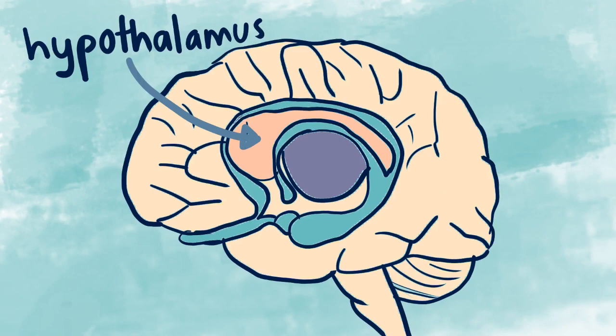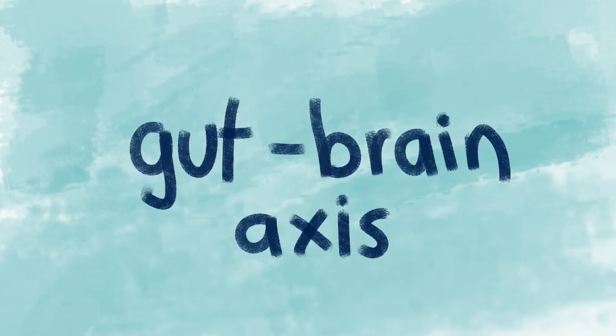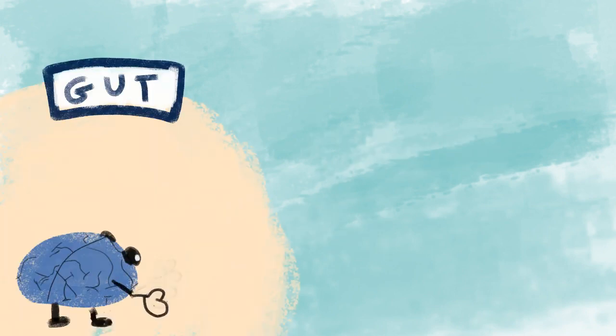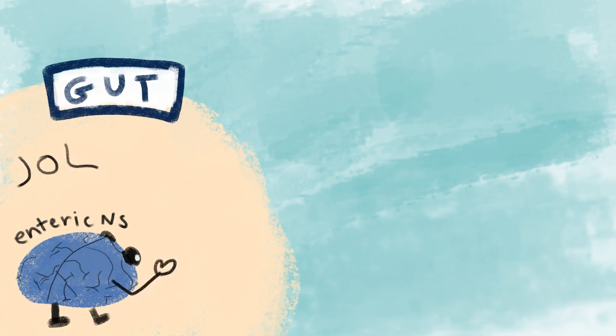Then there's also the gut-brain axis. It turns out the gut kind of has a second brain, the enteric nervous system. The enteric nervous system is part of the autonomic nervous system. It acts involuntarily. The enteric nervous system consists of many neurons and controls functions in the gastrointestinal tract.